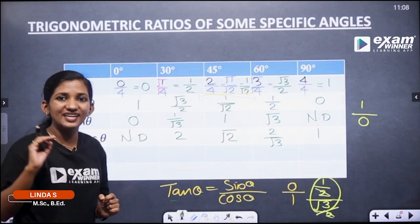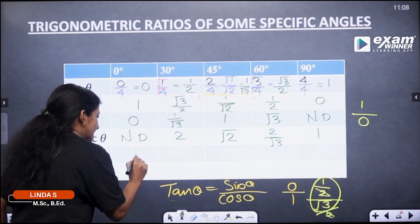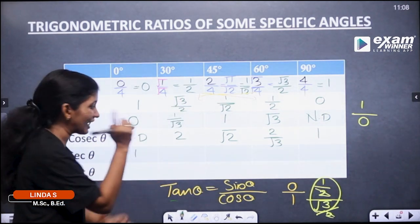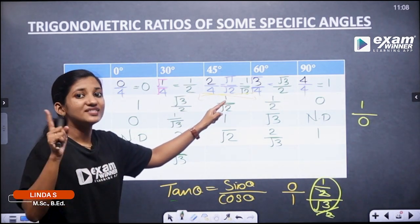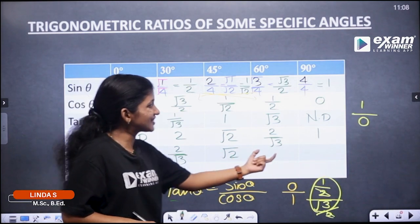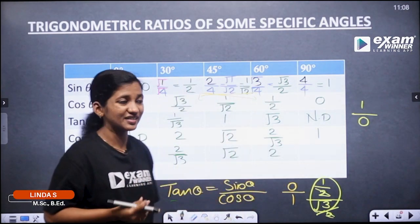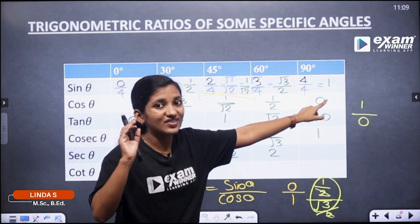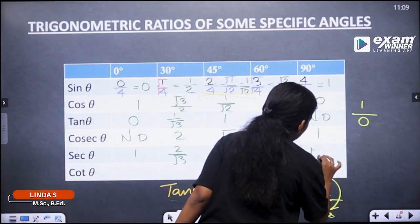Next, sec values. Cos 0° = 1, so sec 0° = 1. Cos 30° = √3/2, so sec 30° = 2/√3. Cos 45° = 1/√2, so sec 45° = √2. Cos 60° = 1/2, so sec 60° = 2.